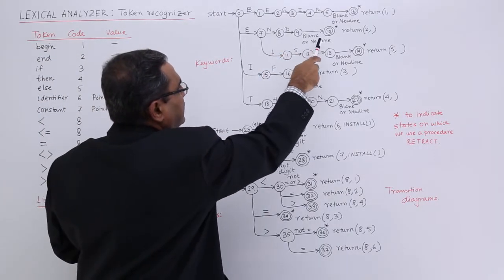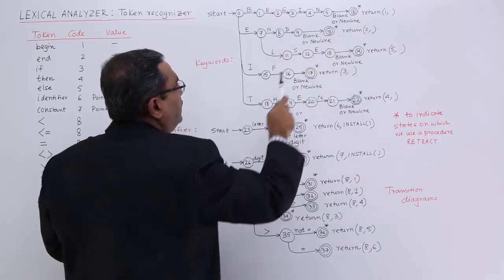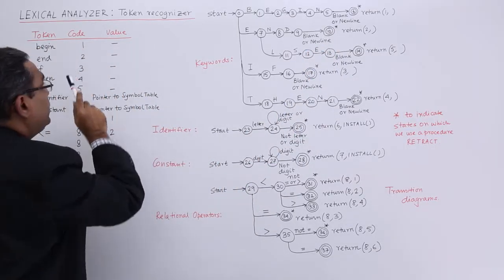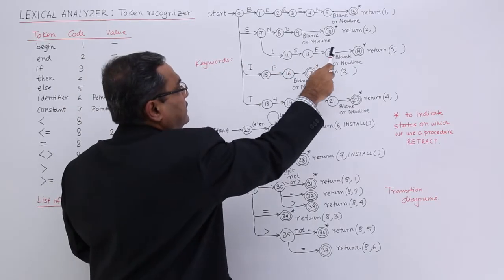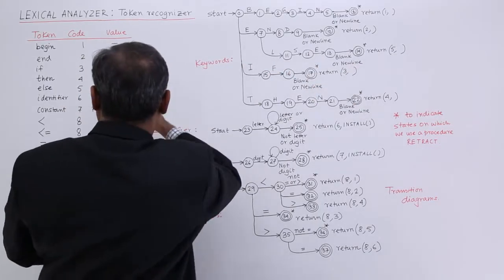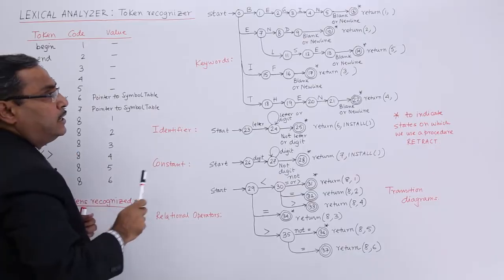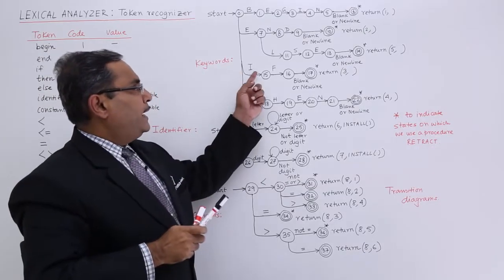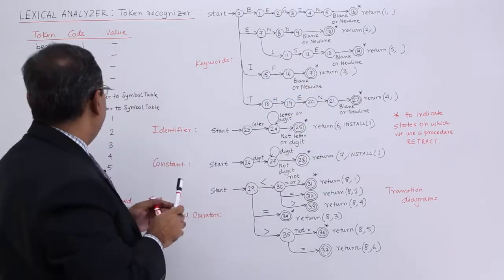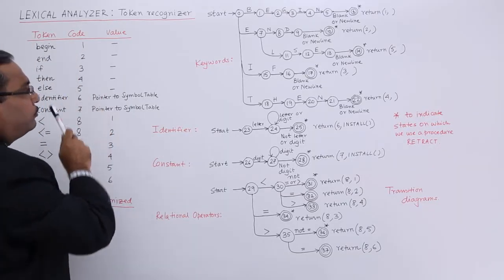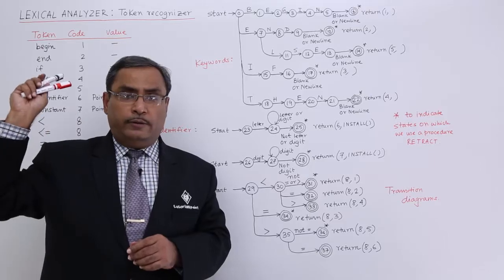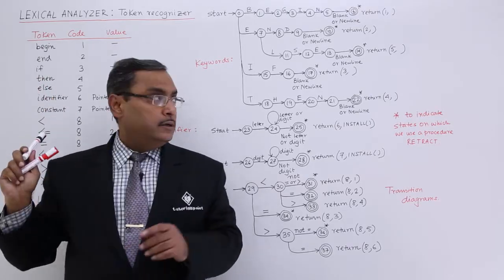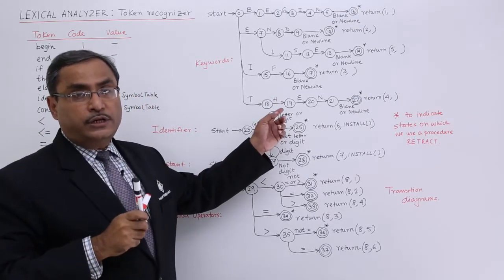END blank or newline as delimiter, then return 2, because end will return the value code 2. ELSE, same thing, return 5. In this way if we proceed, IF then blank or newline return 3, because if should return 3 here. Accordingly, whatever the token recognizing table is there, we have developed this transition diagram accordingly.